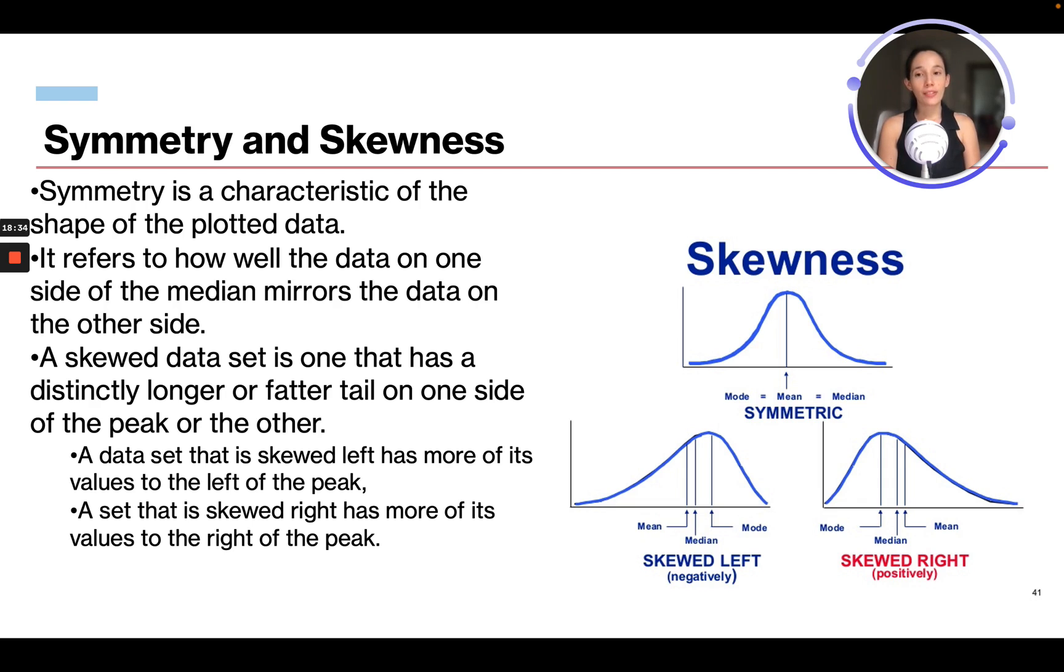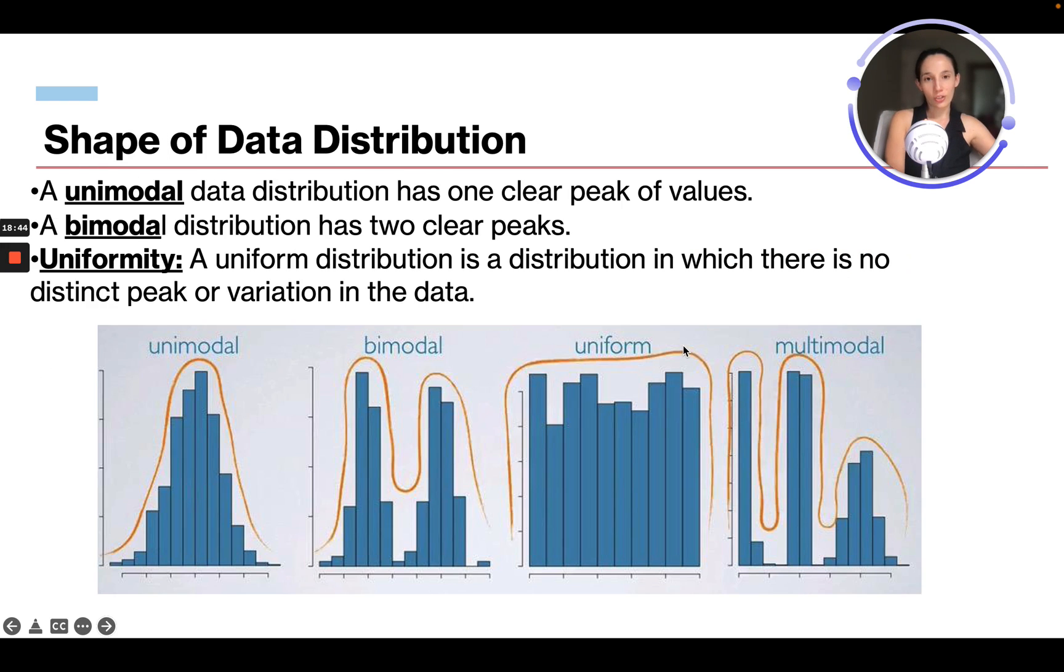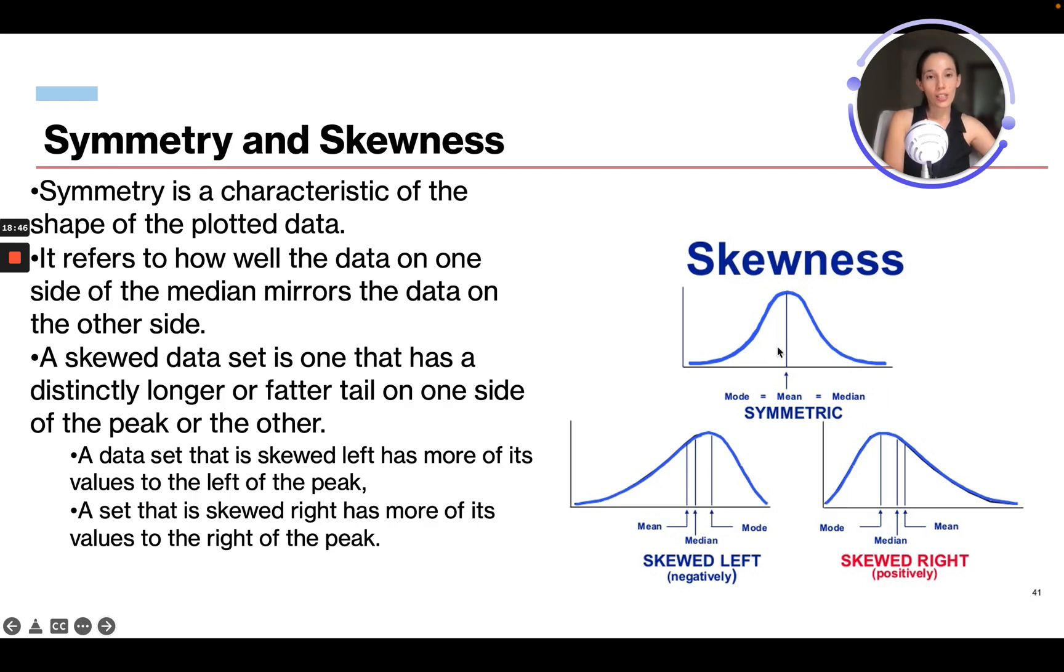A data set that's skewed left has more of its values to the left of the peak. A set that is skewed right has more of its values to the right of the peak. So we can see, here's our histogram. Our mean is right in the center. This means that our mode, median, and mean are all the same. This is a perfect skewness for a histogram.